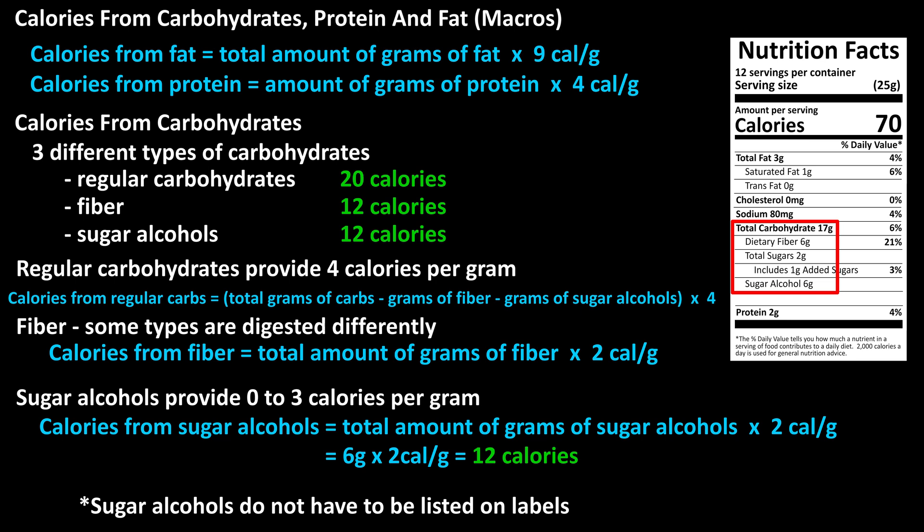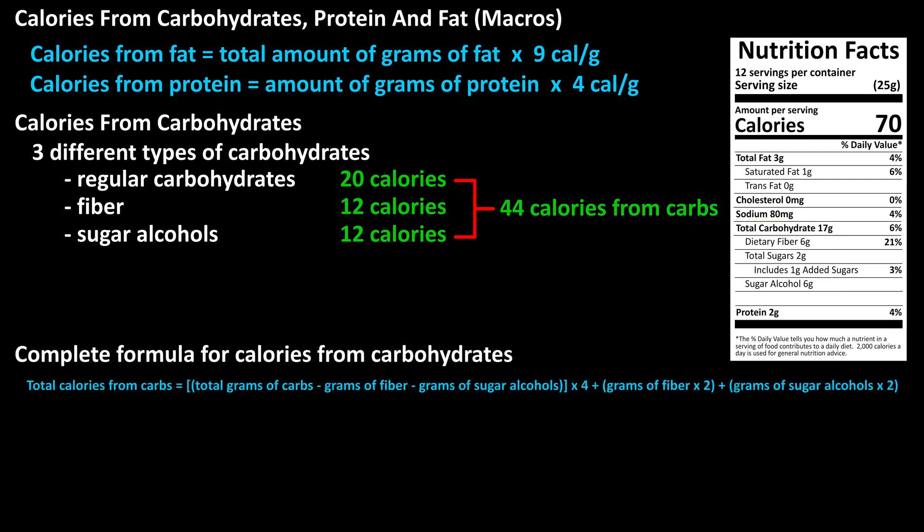Now we can add up the total calories from all the carbohydrates. We have 20 calories from regular carbohydrates plus 12 calories from fiber plus 12 calories from sugar alcohols, which gives us 44 total calories from carbohydrates. The complete formula is: total calories from carbohydrates equals the quantity of total grams of carbohydrates minus grams of fiber minus grams of sugar alcohols, times four, plus grams of fiber times two, plus grams of sugar alcohols times two.